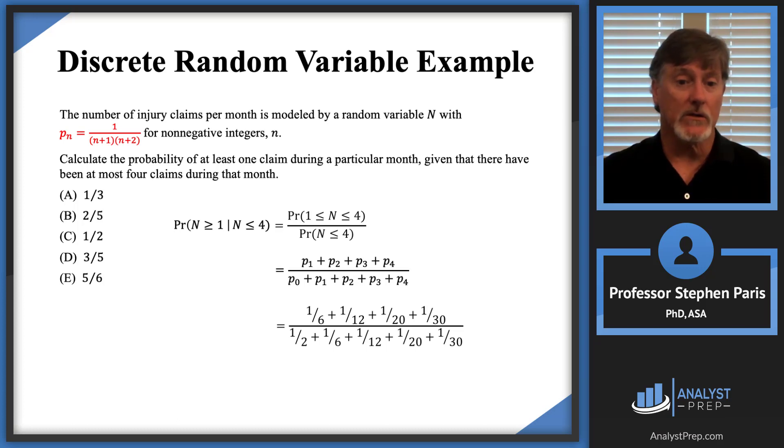And likewise, the second term in the numerator: plug in 2 for n in what's highlighted in red to get the P_2 value, and I get 1 divided by 3 times 4, which is 12. So that's 1/12. I'll let you do the rest of the calculations.